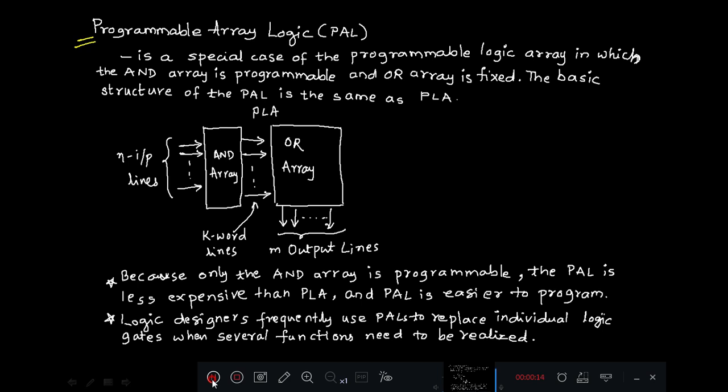In last class we have seen a PLA structure where it consists of an AND Array and OR Array. The function is implemented based on AND Array computing sum of product terms and OR Array groups together to form the output functions. The only difference between PLA and PAL is in PLA both AND Array and OR Array are programmable. In PAL, OR Array is fixed and AND Array is programmable.